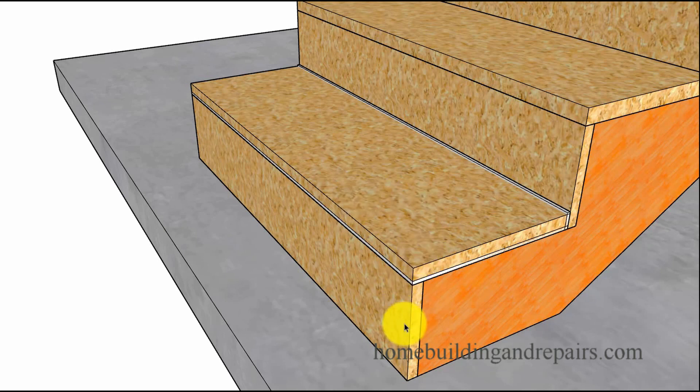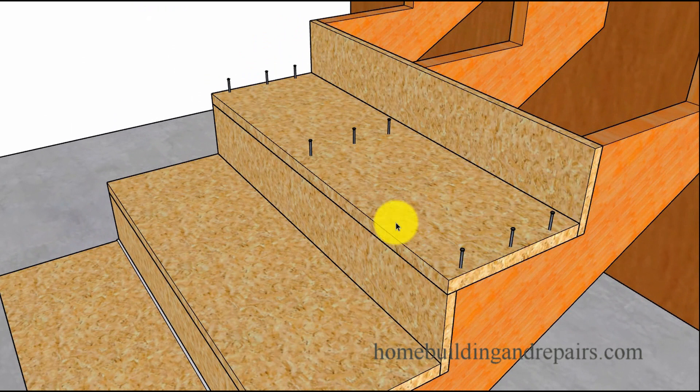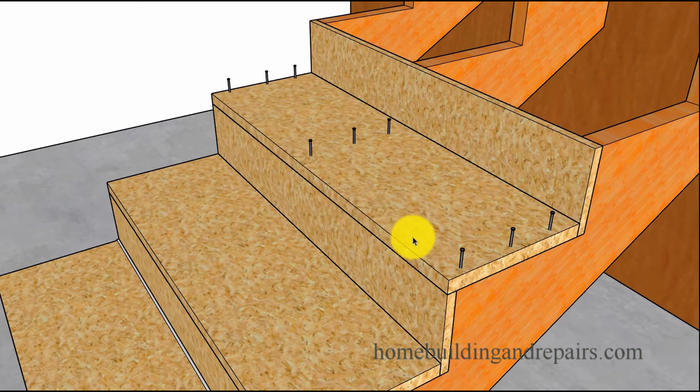Put our inch and an eighth plywood or OSB treads on. So we've got three-quarter inch risers. Inch and an eighth OSB or plywood for the treads. Nailing would be something like this.